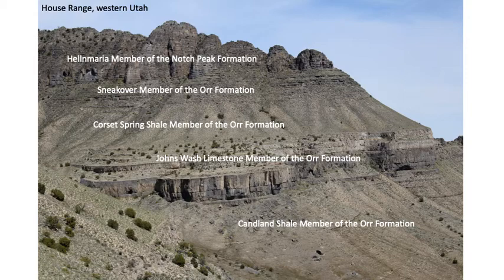Above the Ore Formation there's a contact with the overlying Notch Peak Formation, which has three members — the Hella Moriah Member at the lowest (a dolomite). The Sneak Over Member of the Ore Formation is mostly limestone; the Johns Wash is high-energy shallow-water with ooid grainstones at the top and stromatolites at the bottom; and the Kanland Shale is below that.